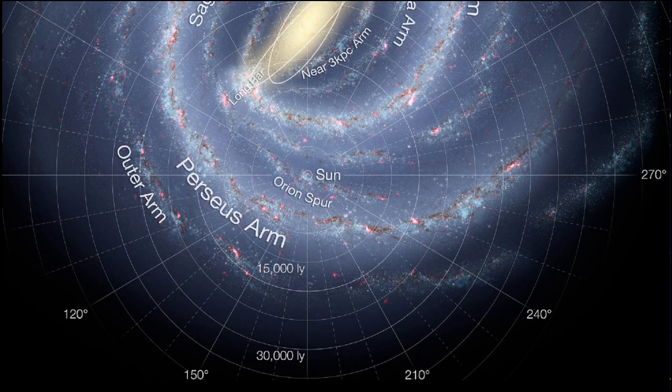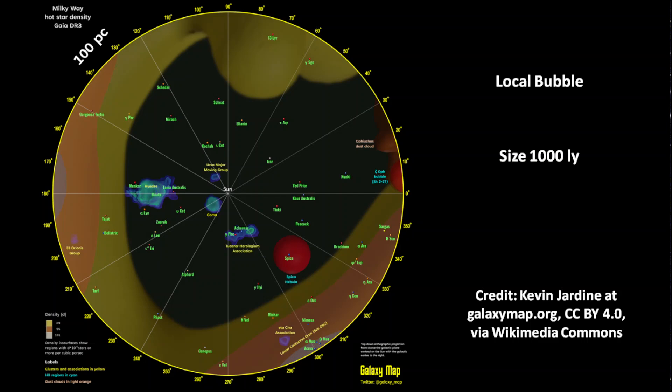The spiral arms are density waves in the galactic disk. The local bubble has a size of over 1,000 light years and is part of the Orion Arm. It was formed by the explosion of a star and has a lower gas and dust concentration than the surrounding regions. The expanding bubble causes star formation in the outer regions.